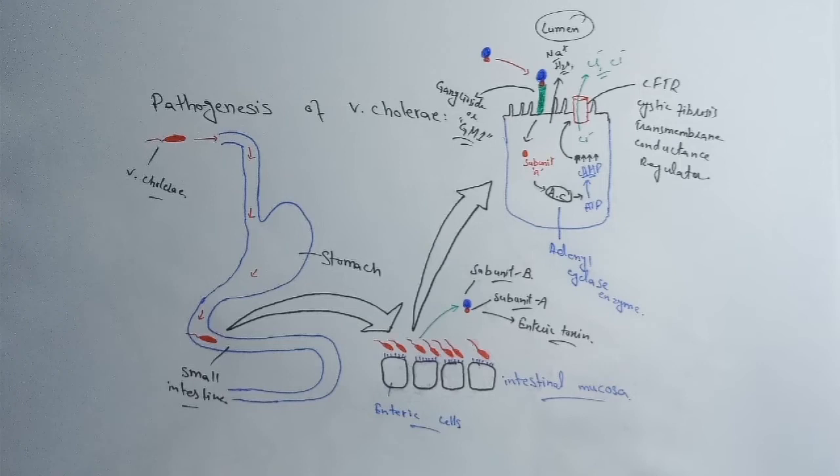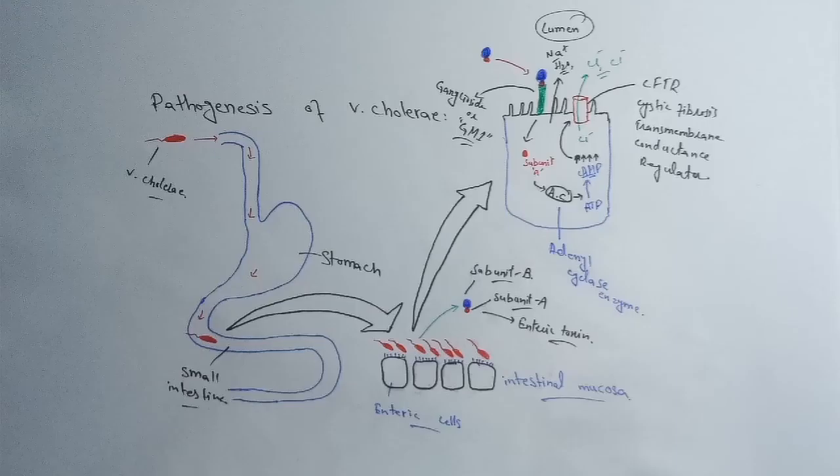When chloride ions move out of the cell from the CFTR, due to the concentration gradient, sodium will move out into the lumen. When sodium moves out, we know that water follows sodium. When sodium moves out of the cell into the lumen, the water will also move out, and then water comes out into the lumen, it will cause diarrhea.